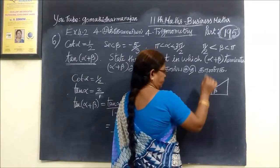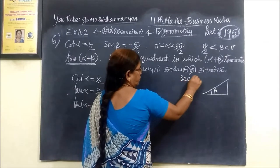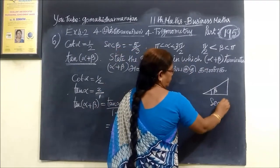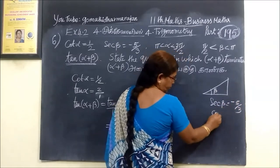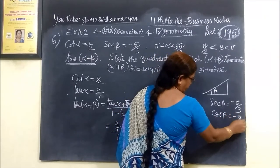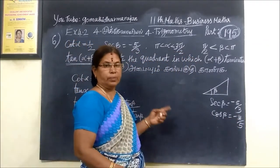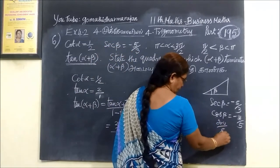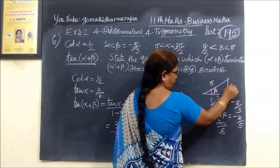Secant beta is equal to minus 5 by 3. So, cosine beta is equal to minus 3 by 5.